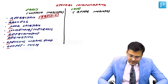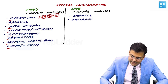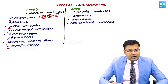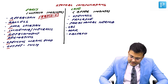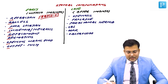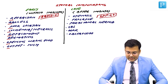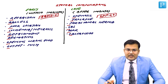Late complications are stenosis, prolapse, parastomal hernia, gas, odor, and obstruction. The mnemonic is SPF GO: Stenosis, Prolapse, parastomal hernia (F), Gas, Odor, Obstruction.